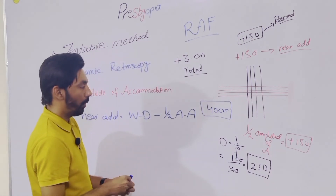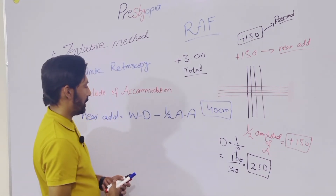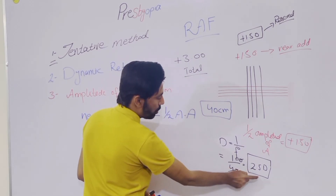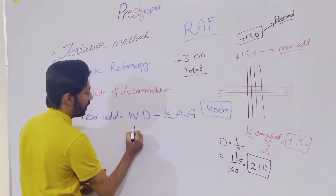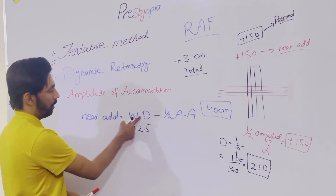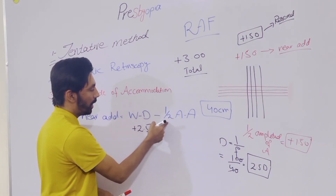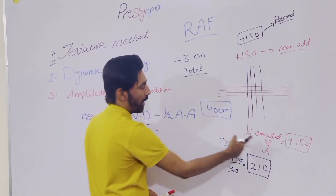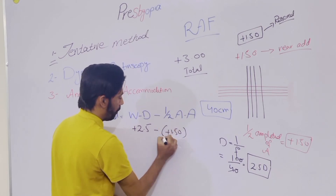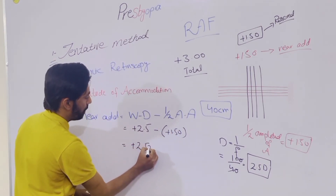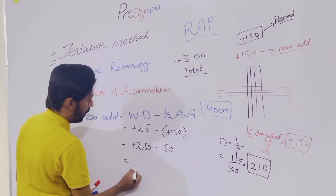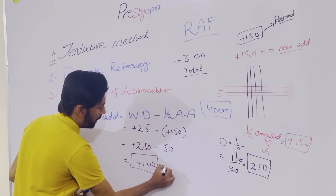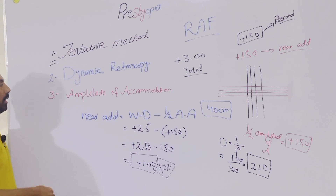Now both values are in dioptric form. Working distance was 40 centimeters, converted to 2.5 diopters. So working distance is plus 2.5. We deduct half of the amplitude of accommodation — which is plus 1.5 — from the working distance: 2.5 minus 1.5 equals plus 1.0. So this plus 1.0 spherical is our near add.